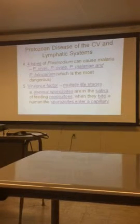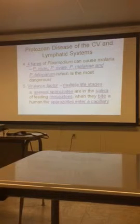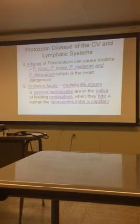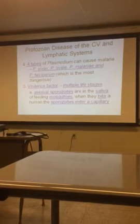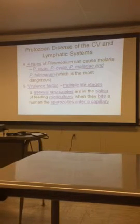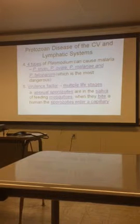There are four types of Plasmodium that can cause malaria. The most dangerous is Plasmodium falciparum, followed by Plasmodium vivax, Plasmodium ovale, and Plasmodium malariae. A key virulence factor is the multiple life stages of this protozoan. In the mosquito, the asexual sporozoite stage is present in the saliva, and when the mosquito bites a human or animal, sporozoites are injected into the host.